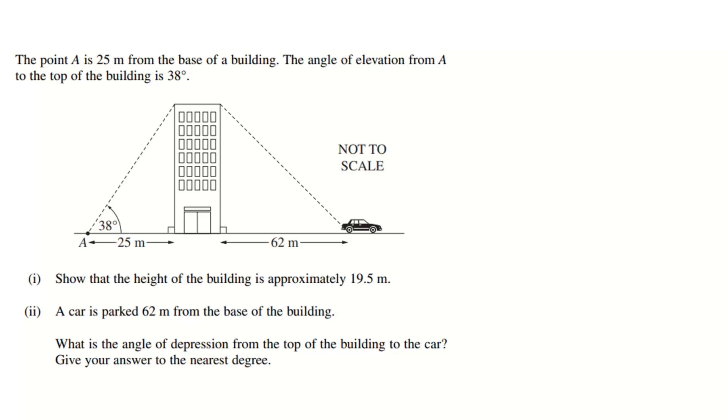Okay, in this video we're going to work through this problem involving angles of elevation and depression, but also involving multiple triangles. So we're given all this information here, and our first job is to show that the height of the building is about 19.5 meters. That's our answer, that's our goal - we've got to work out the correct journey there.